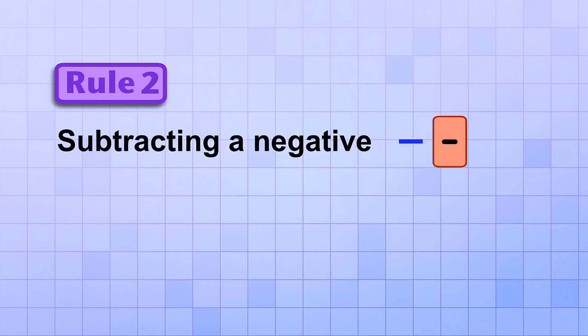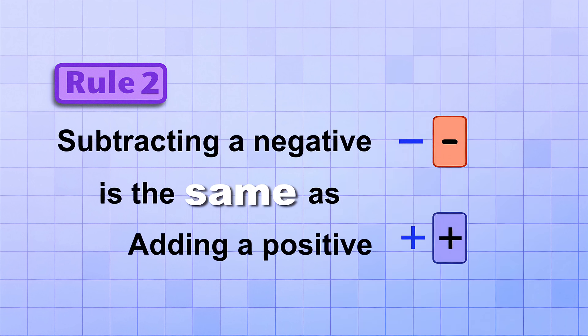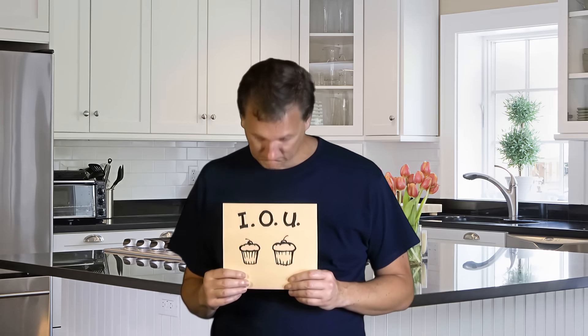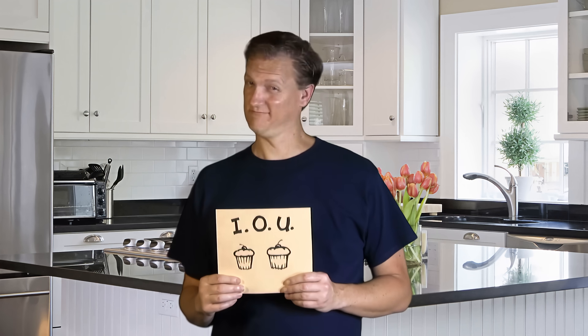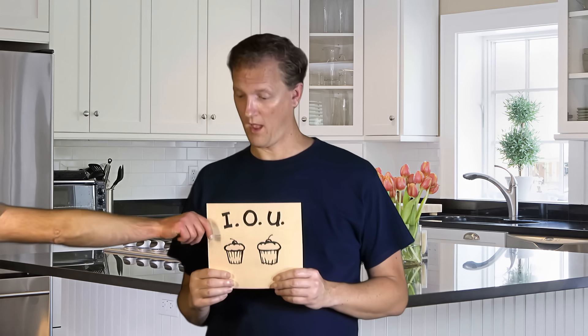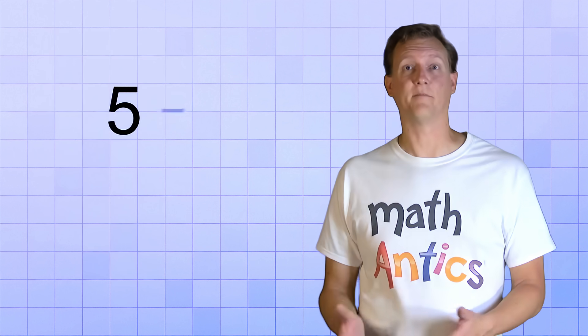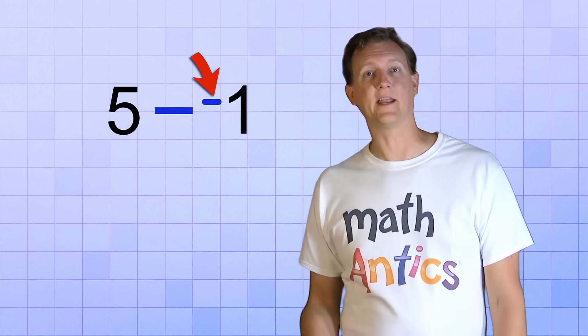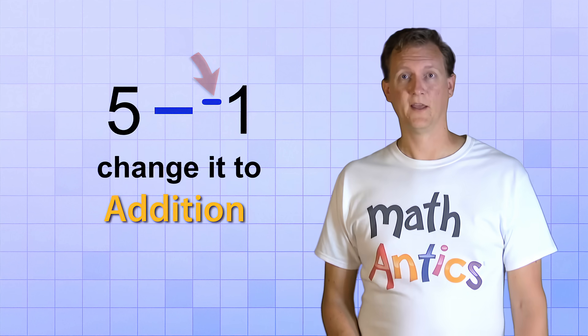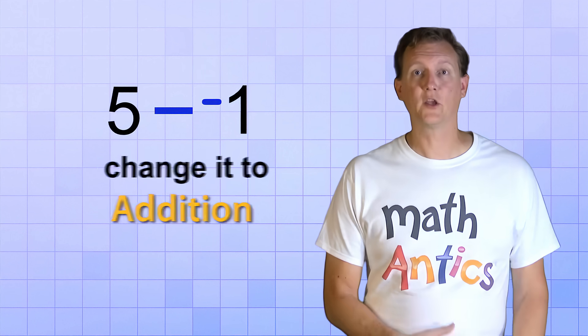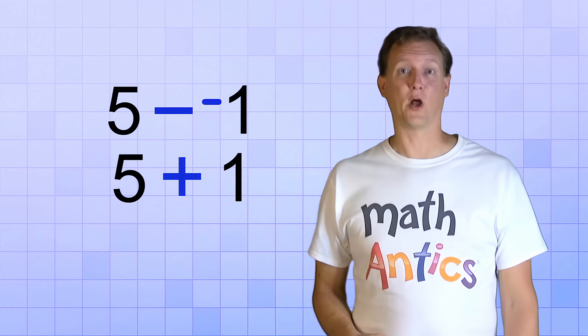The second rule is: subtracting a negative is the same as adding a positive. Let's say you have negative two cupcakes — like if you have a debt. You owe me two cupcakes. You wouldn't be too happy having that negative, would you? But what if I subtract that negative from you? Taking away the negative 2 made you more positive. Subtracting the negative gives you less debt. In math, this means that if you have a problem like 5 minus negative 1, where you're subtracting a negative number, you can just change it to addition: 5 plus 1. And that's a problem you already know how to solve.